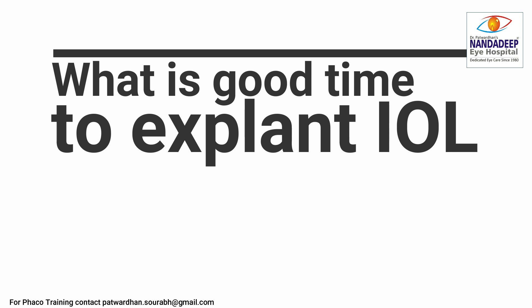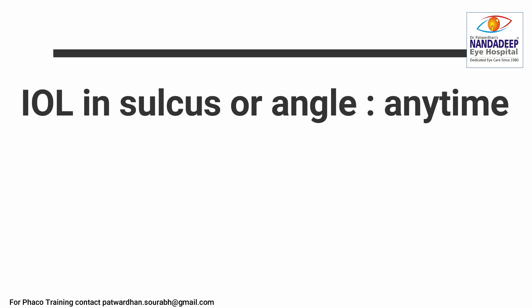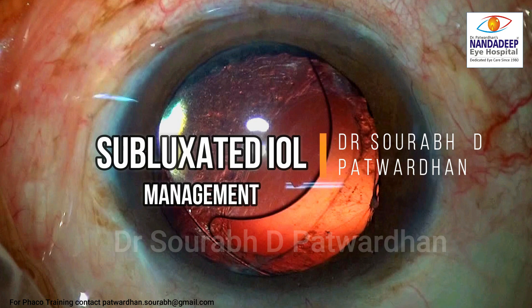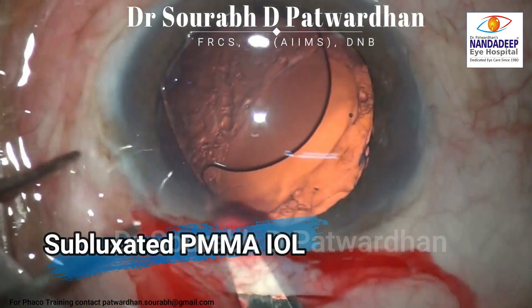What is a good time to explant an IOL? It's never an easy decision — a surgeon who has implanted an IOL doesn't want to explant it. But if the IOL is in the sulcus or angle you can remove it anytime, as it's not fixed to any ocular structures. If the IOL is in the bag, up to two months it's easier; after that you have to decide on a case-to-case basis.